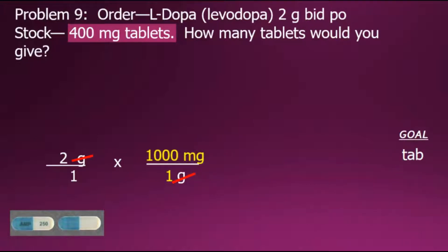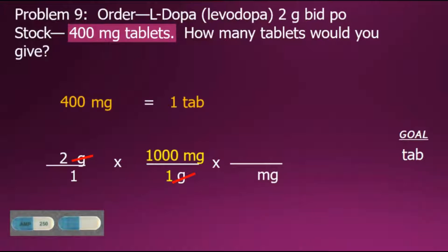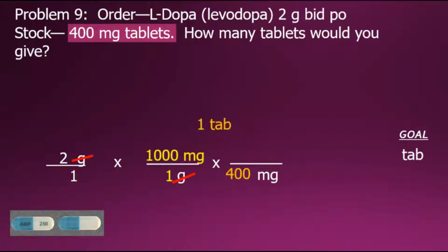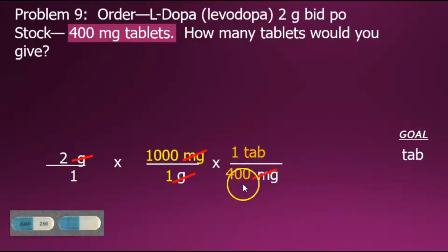Our goal is tablets, and at this point we'll use the information given in the problem to eliminate milligrams. We will establish a conversion fraction with milligrams in the denominator so that it cancels out. Placing equivalent values in fractional form — one tablet in the numerator equivalent to 400 milligrams in the denominator — also creates a fraction with a value of 1 that allows us to convert from one unit to the next. Our common factor of milligrams cancels out, and the only unit remaining is tablet, which is an indication that we've set up the problem correctly.